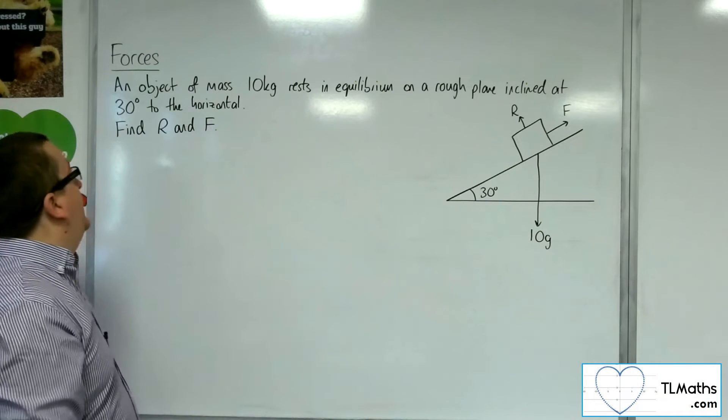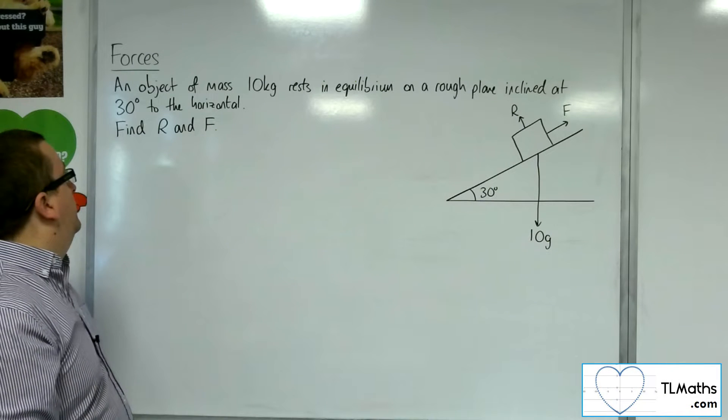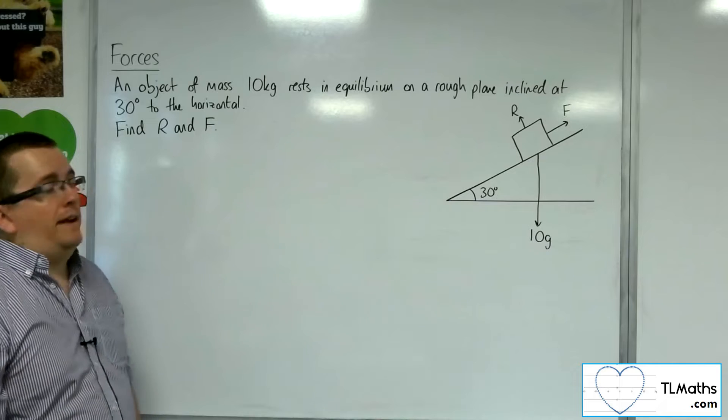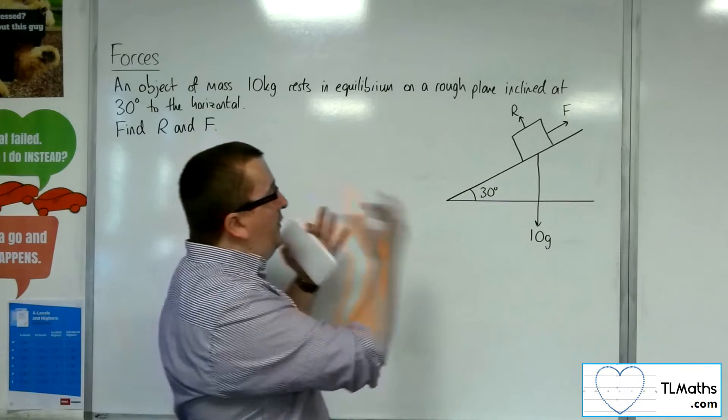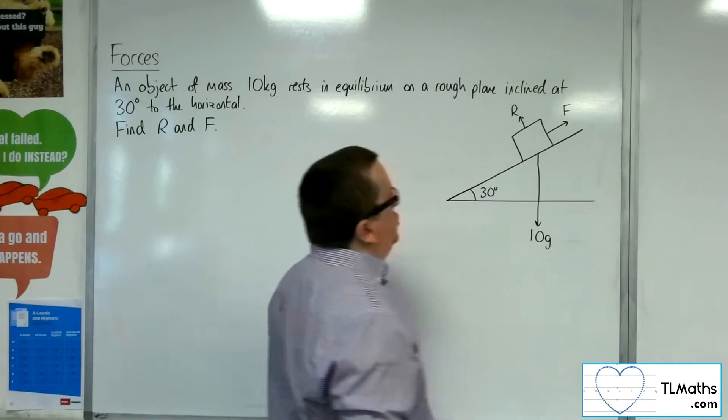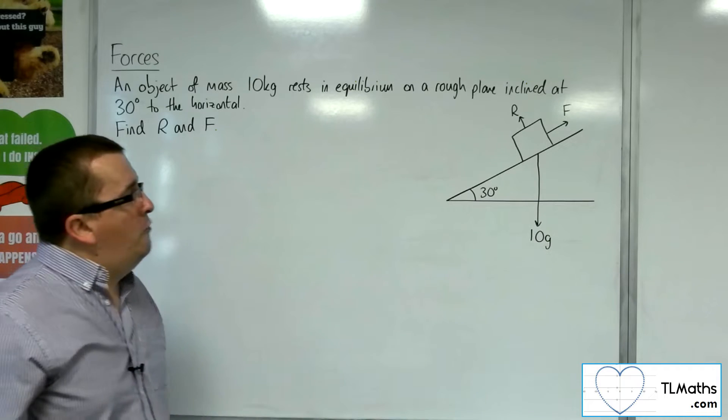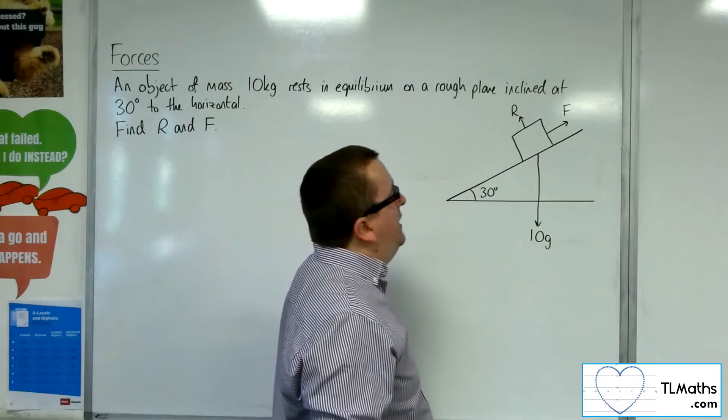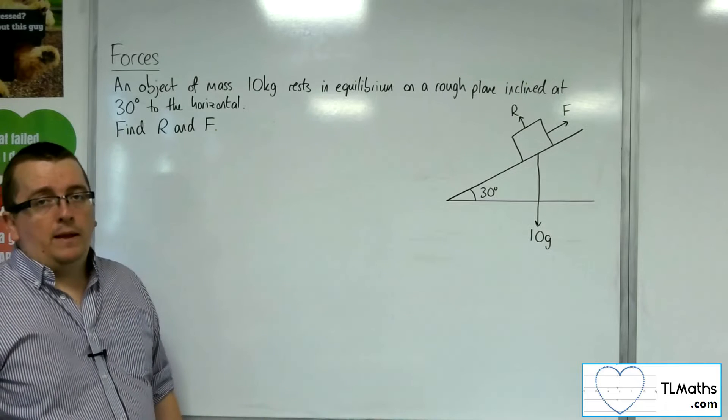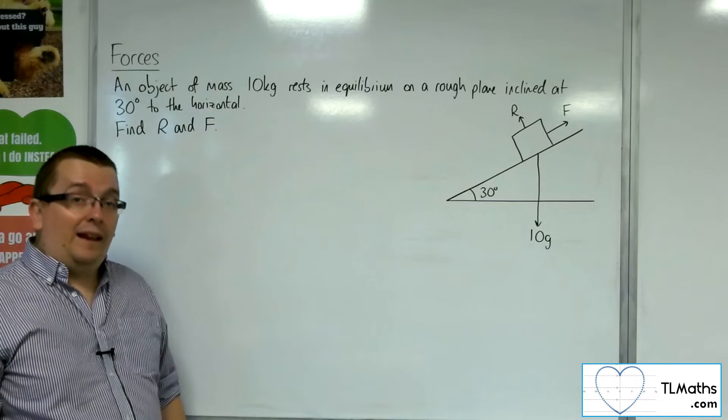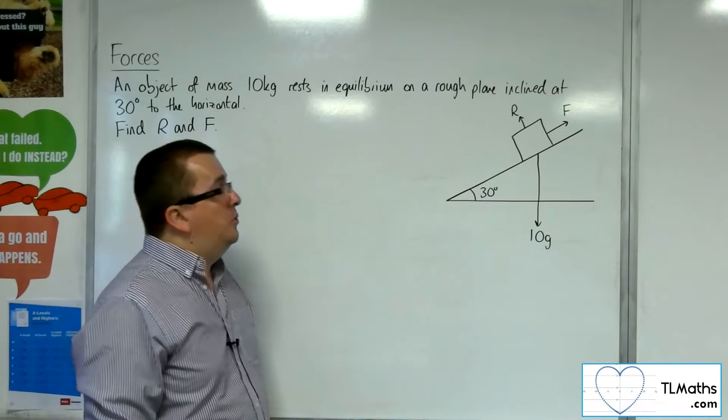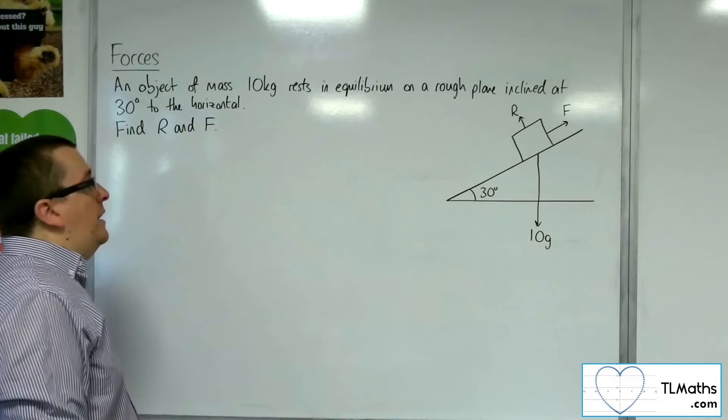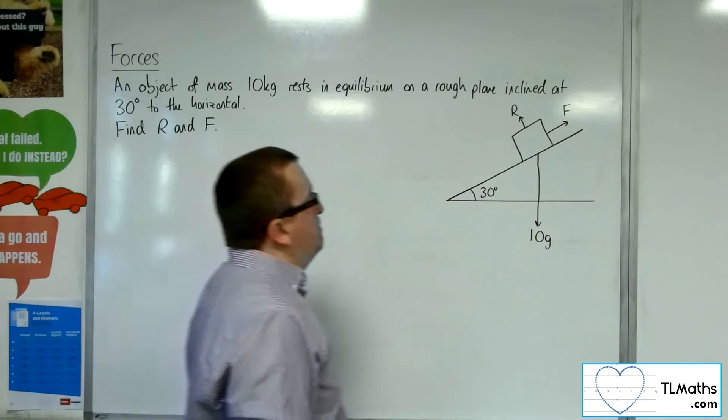Equilibrium on a rough plane inclined at 30 degrees to the horizontal. Find R and F. So here is the diagram for this situation. We need to find that normal reaction force R and the friction F, that force that is keeping the object in place, which is stopping it sliding down that plane.